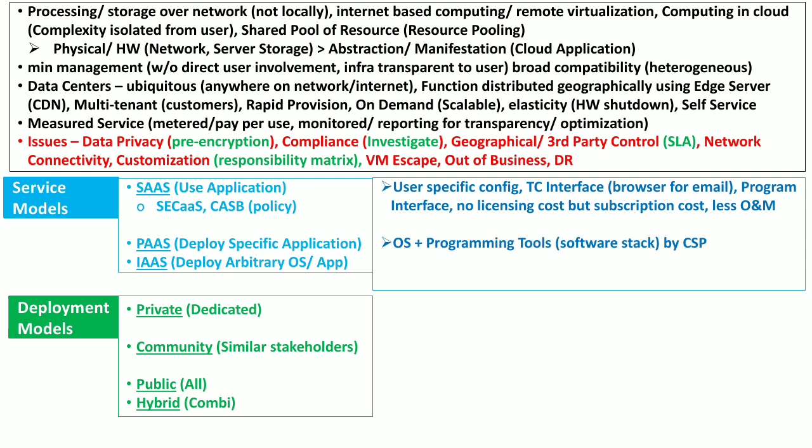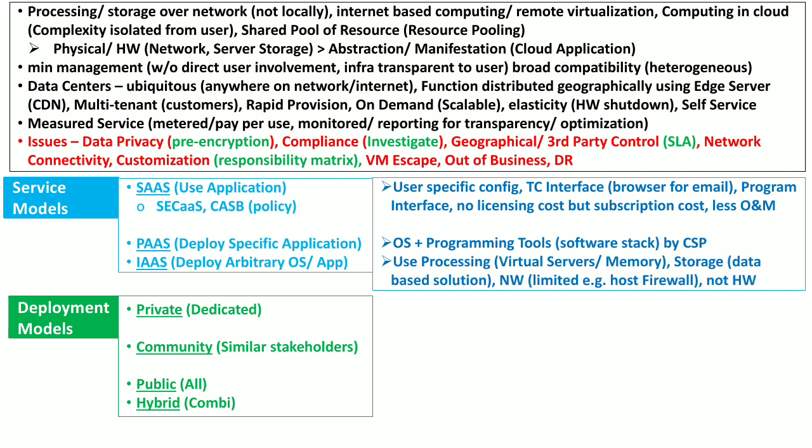In platform as a service, the operating systems and programming tools are provided by the cloud service provider, and the user just uses this software stack to deploy its own application. In infrastructure as a service, virtualized infrastructure in the shape of virtual servers, memory, storage, and network is provided to the user. However, the actual hardware is never provided to the user — it still remains the responsibility of the cloud service provider.